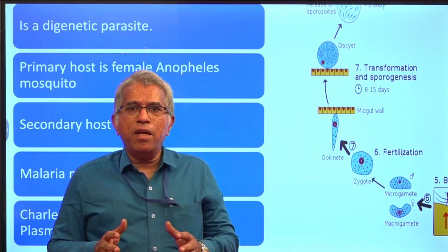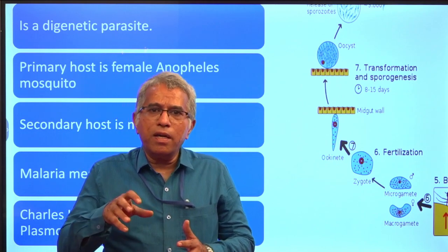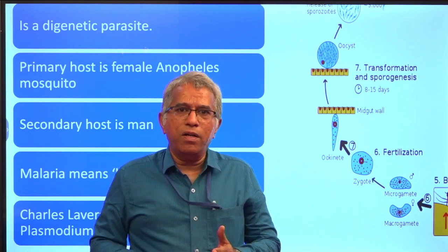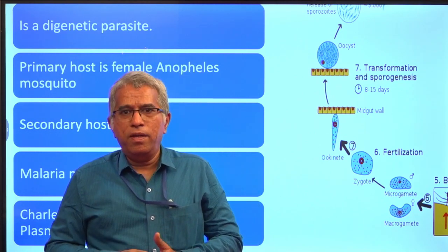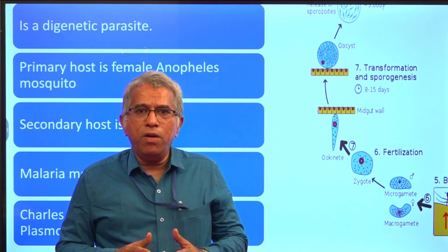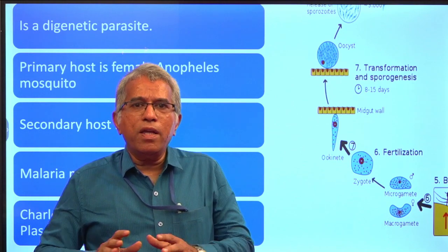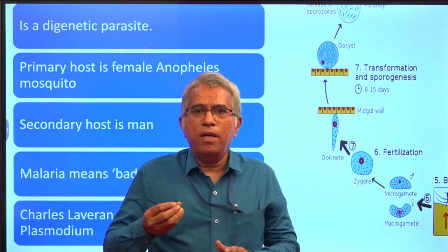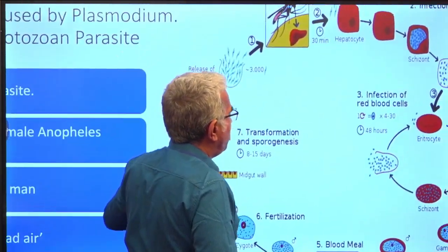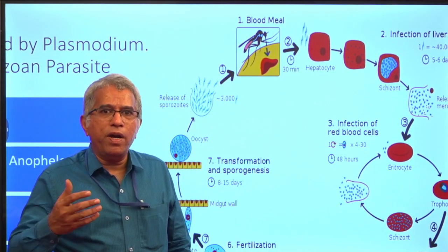The female Anopheles mosquito sucks human blood. Whenever it is sucking the blood, it introduces saliva — it injects saliva into the human body. The Anopheles mosquito saliva contains one anticoagulant by name hemolysin, and this prevents the clotting of blood while the mosquito is sucking. As a result, when the mosquito introduces this saliva along with hemolysin, the sporozoites also enter into the human blood.